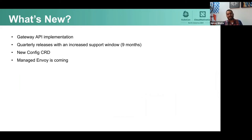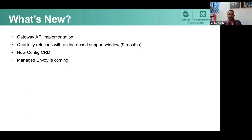To touch again on what's new in Contour: we've been working hard on a Gateway API implementation. As Alex mentioned, we are pretty far along and should be one of the most advanced implementations of the API. The Gateway API has recently released V1 alpha two, and we're working on implementing that — it should be coming in the next release or so of Contour. Currently Contour supports V1 alpha one, and Steve Chris will be demoing that in a few minutes.